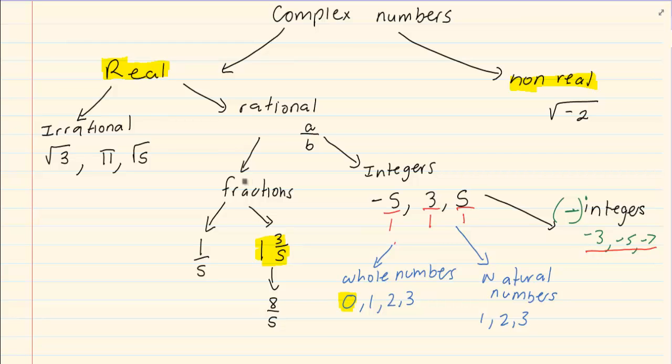After fractions and integers, the last section that you get under rational numbers is decimals. Now decimals, you can get normal decimals, which are 0.5, which can become a fraction, 1 over 2.